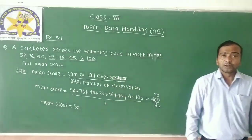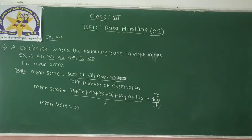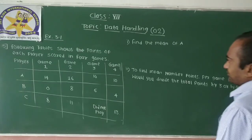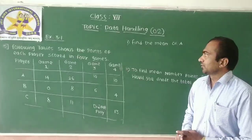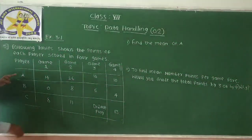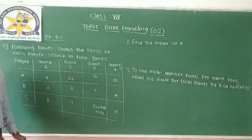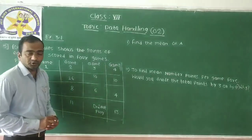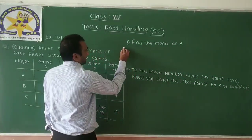Therefore the mean score is 50. Now we move on to question number 5. The following table shows the points scored by each player in 4 games. There are 3 players — A, B, C — and they played 4 games. The first sub-question asks us to find the mean score of Player A.